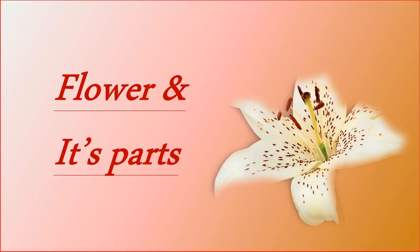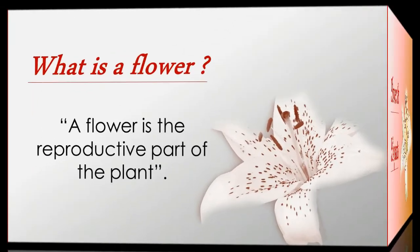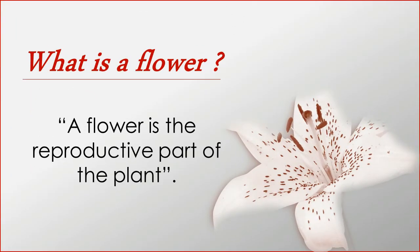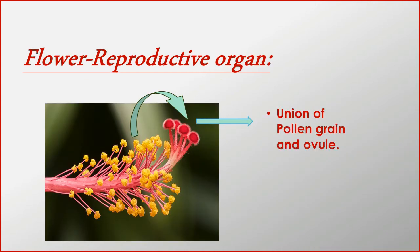In today's video I'm going to talk about a flower and its parts. A flower is the reproductive part of the flowering plants. It plays a role in reproduction by facilitating the union of pollen grain and ovule. This union leads to the formation of the zygote.